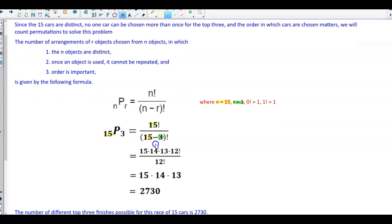It's best to start at the denominator first. 15 minus 3 gives us 12 factorial. In the numerator, when we write 15 factorial, we don't have to go all the way down to 1. We can stop at 12 factorial, because this is 15 times 14 times 13 times 12 factorial.